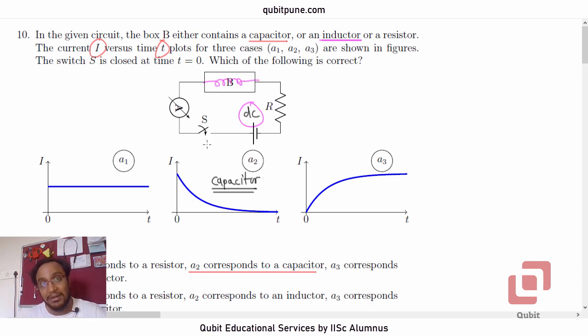But once the current establishes itself and reaches its peak value, it will not change with time and it will become a steady current. Which means this represents an inductor.